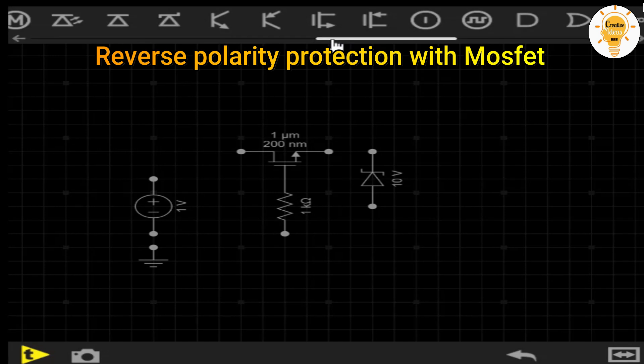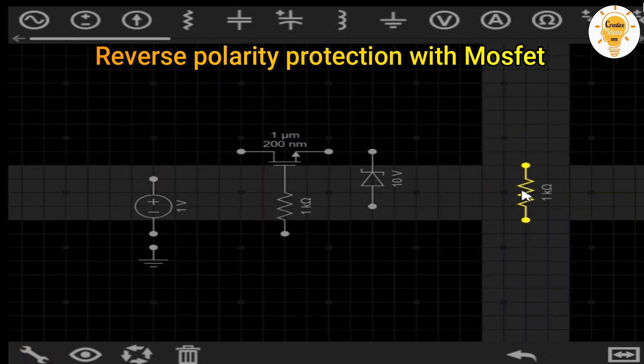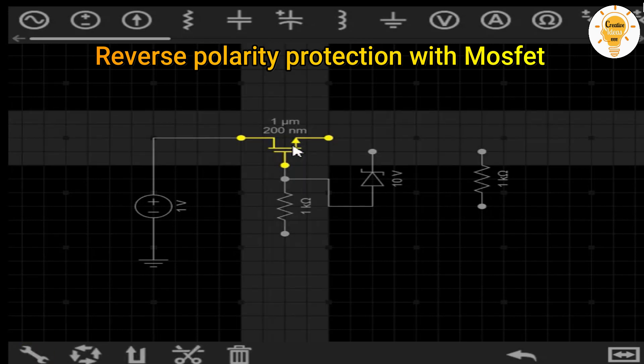As it can be observed, when connecting the source correctly, the internal diode of the MOSFET begins to lead because it is directly polarized. This causes the emitter voltage to increase and therefore the base emitter difference. When this voltage reaches the saturation point, the MOSFET begins to conduct with almost no voltage drop.